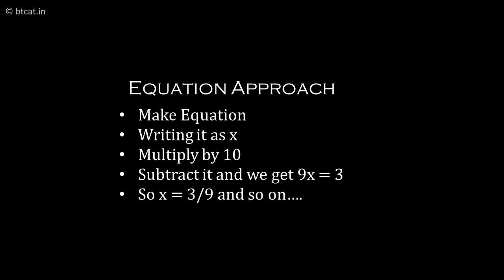As you know, 0.3 bar equals 1/3, but we'd like to learn the process behind it. One method is the long equation approach: writing it as x, multiplying by 10, subtracting to get 9x = 3, and therefore x = 3/9 and so on.